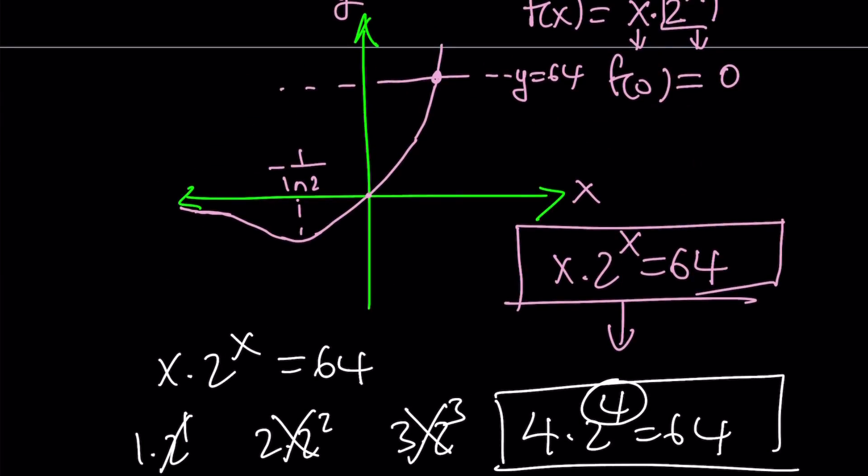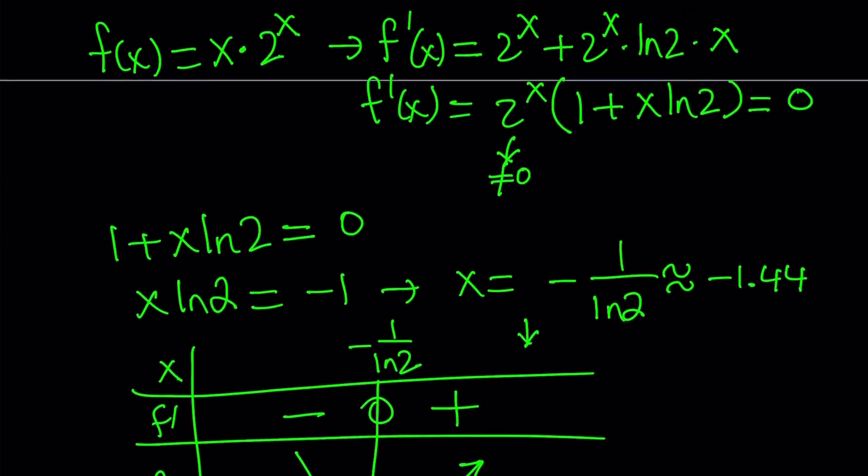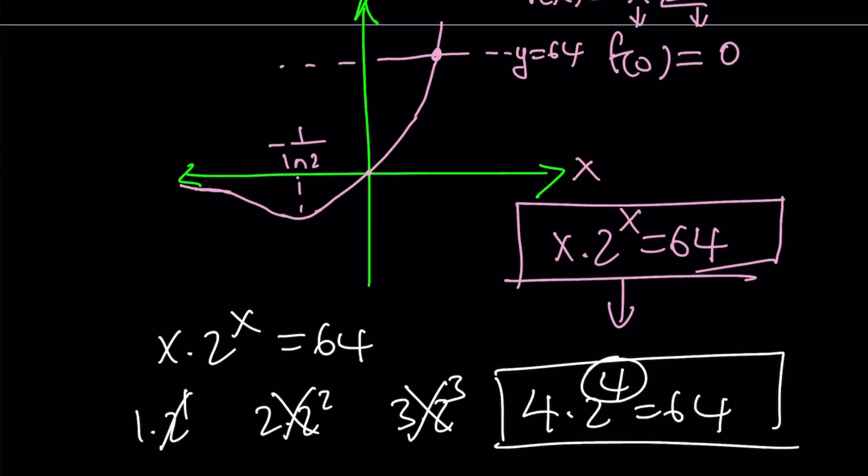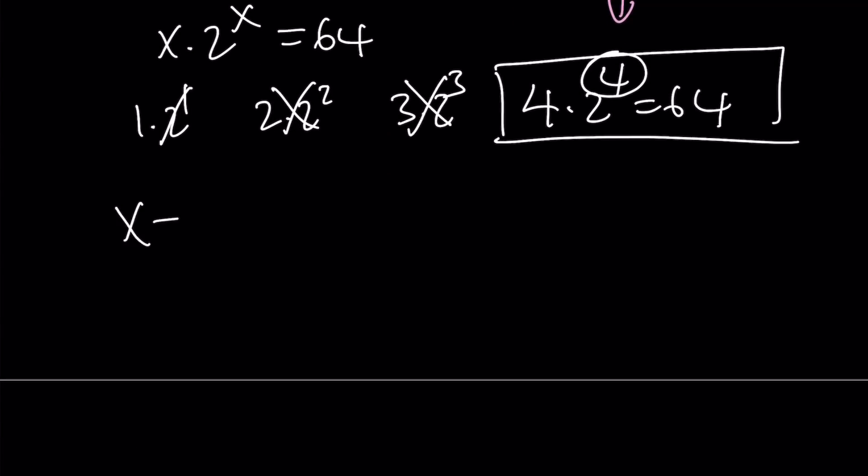But remember, it's not the answer. We were looking for a and b, and a happens to be 2^x. Therefore, since x = 4 is a solution to this equation, a becomes 2^x, which is 2^4, which is 16. So a = 16 is a solution, and we can easily find the value of b by using the other equation.